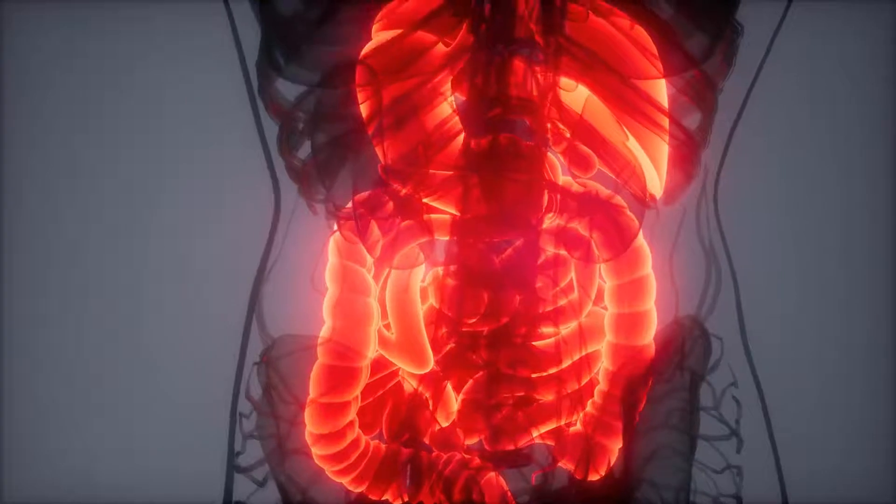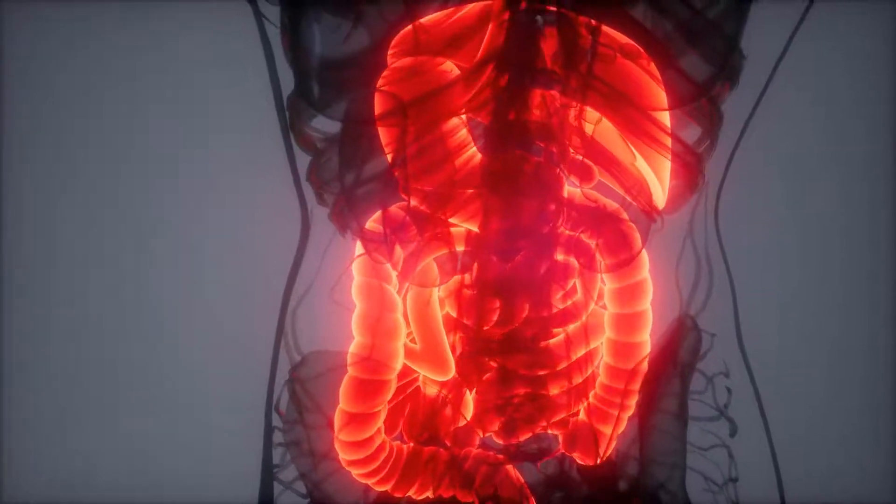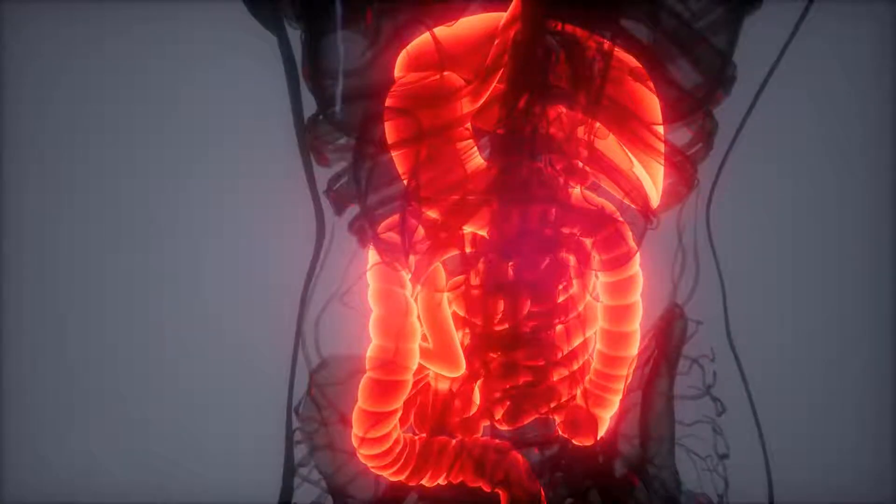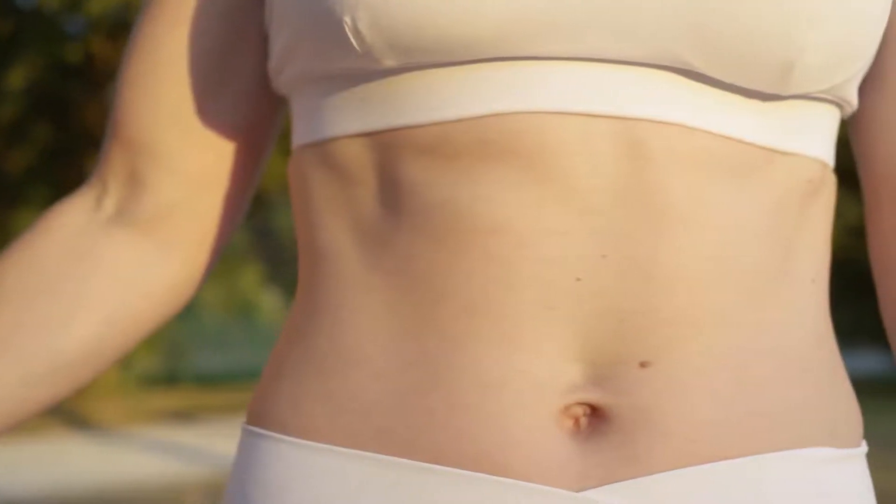The abdominal cavity or abdomen houses organs related to digestion and the urinary tract, along with organs which filter and process blood and other body fluids.